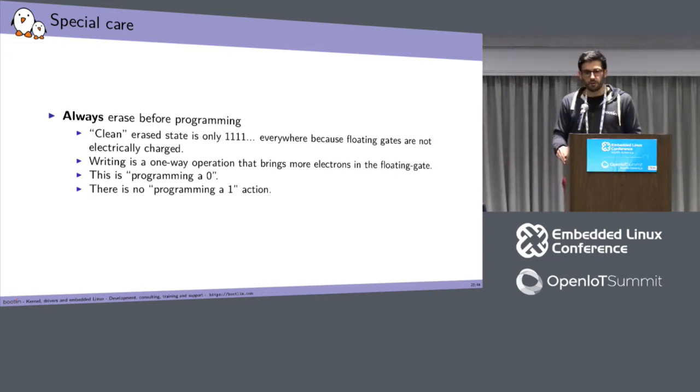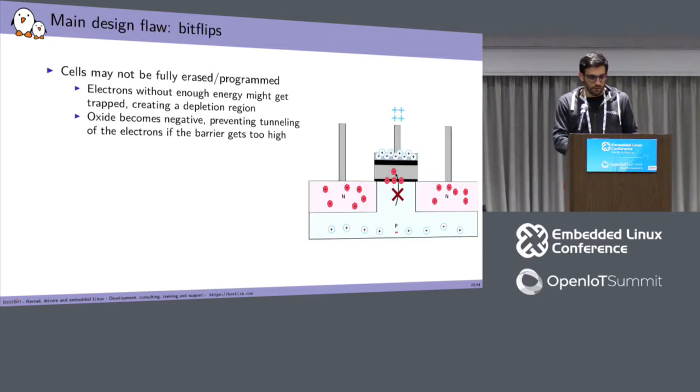This is a bit to sum up. You cannot program a cell to a one state. You can only program it to a zero state. And if you want to erase a cell, you have to erase a whole block. And so you have to erase the whole block before writing the page inside it. You can feel that this design is a bit fragile. Depending on the positive levels, you will choose, you will have a Fowler-Nordheim effect which will be strong or weak. There are several flaws in the designs, and let me explain a few of them.